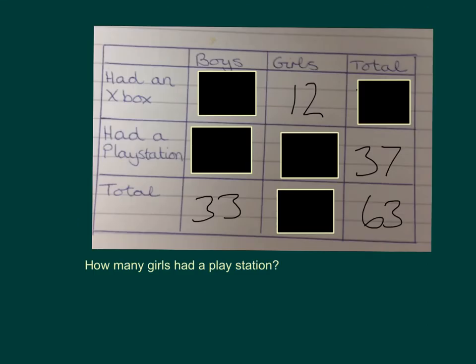Solving two-way tables is very similar to the skills we developed using the kenkens in Year 6 — using the numbers that you've got to work out any missing ones. So the question to look at first is, how many girls had a Playstation? Pause the video and see if you can work this one out.